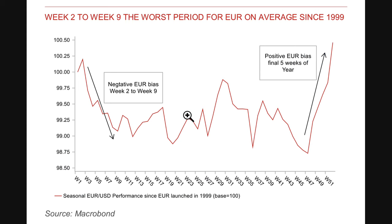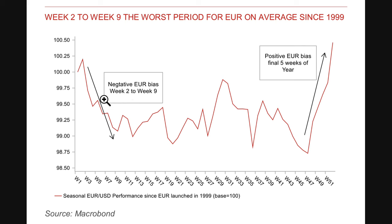There are things also supporting the dollar, one of them being seasonality. This chart shows the seasonal performance of the Euro/Dollar since 1999. Typically within weeks two to nine of the year, the Euro/Dollar gets weaker — meaning the dollar actually gets stronger. There are reasons for that, and it is one of the measures supporting the dollar.